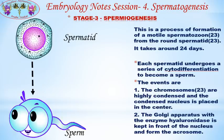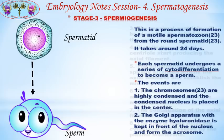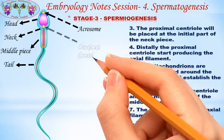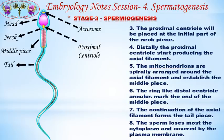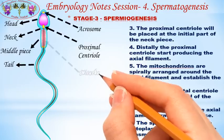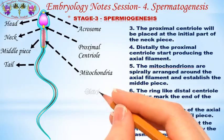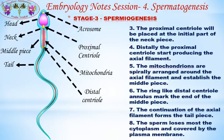Second, the Golgi apparatus with the enzyme hyaluronidase is positioned in front of the nucleus to form the acrosome. Third, the proximal centriole is placed at the initial part of the neck piece, and distally the proximal centriole begins producing the axial filament. The mitochondria are spirally arranged around the axial filament to establish the middle piece. The ring-like distal centriole annulus marks the end of the middle piece, and the continuation of the axial filament forms the tail piece.